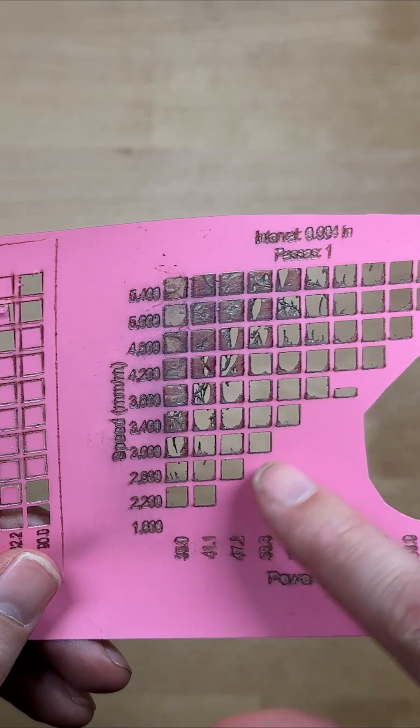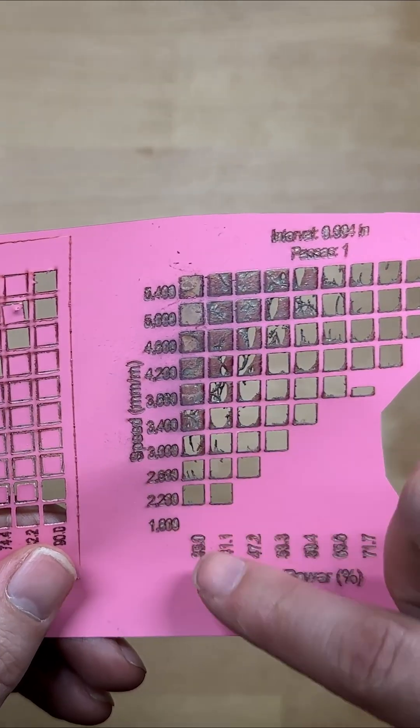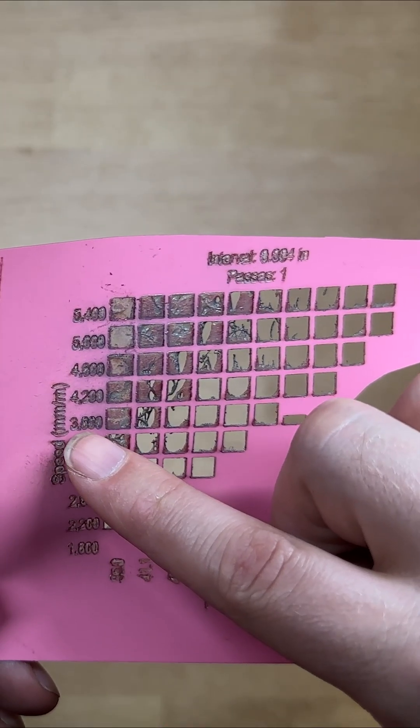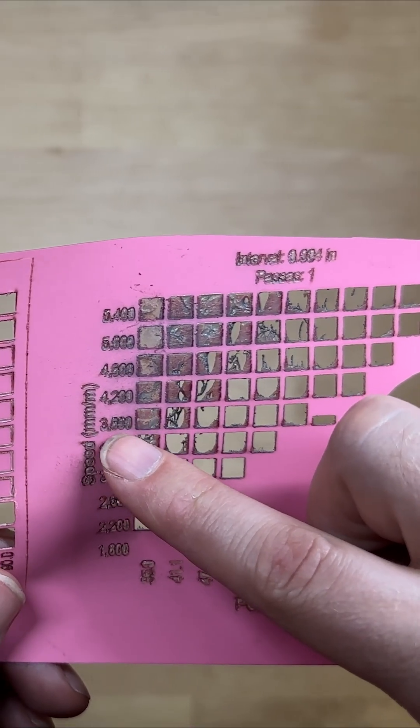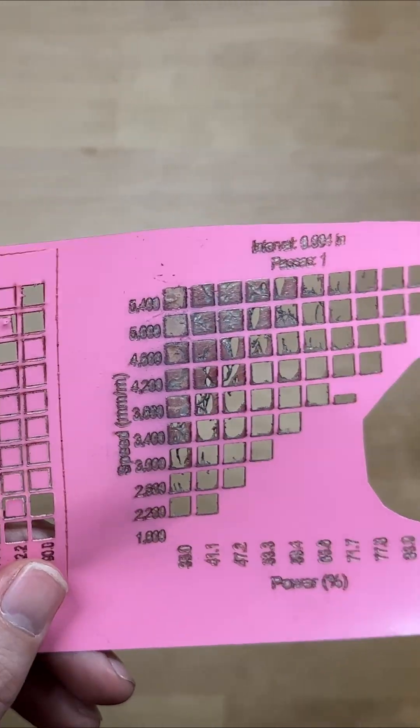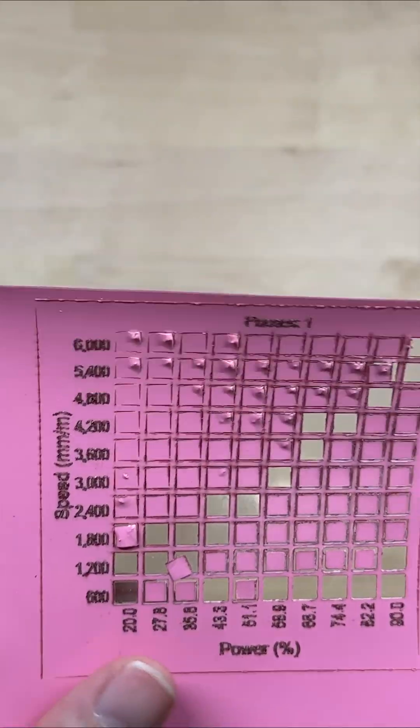I did stop doing the test early because it just started burning through every single time. So if I was going to fine-tune this again, I would have a minimum speed at 3,500 and maximum power at 35%, and then I would set a different parameter lower to test run it. When I do that again, that's what I'll try out.